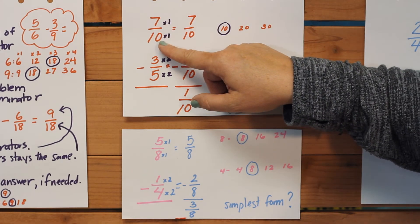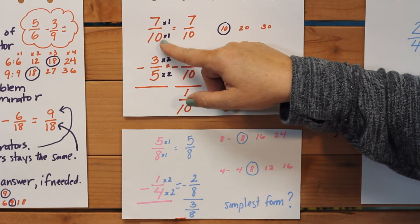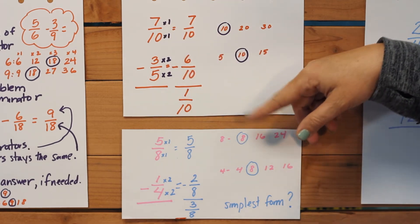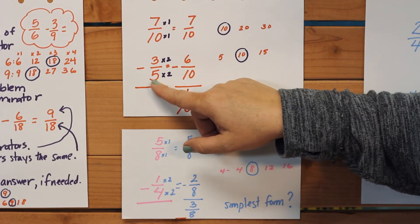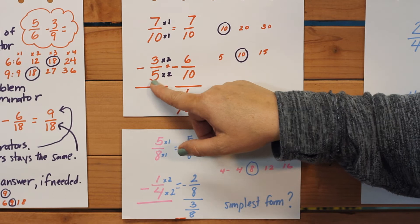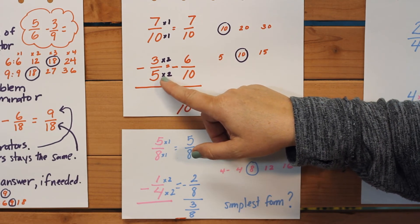Well, 7/10 is already there, so there's really not much we have to do. It times it by one and gives us 7/10, but here the five needs to be changed to a ten. So how many times does five go into ten? Two times.